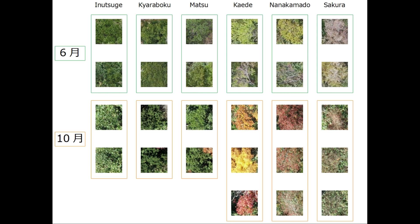There are many problems that can be solved using deep learning networks, and many applications where deep learning is already being used. We mentioned self-driving cars and face recognition, but there are many more. The data in a deep learning network will always be a matrix, but that matrix can come from very different places. We can use techniques to transform words into matrices and then use deep learning networks to predict the next word in a sentence.